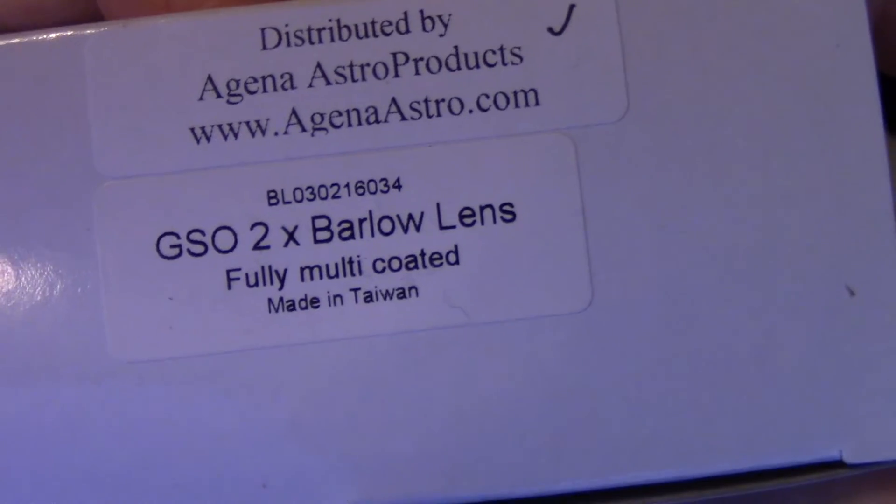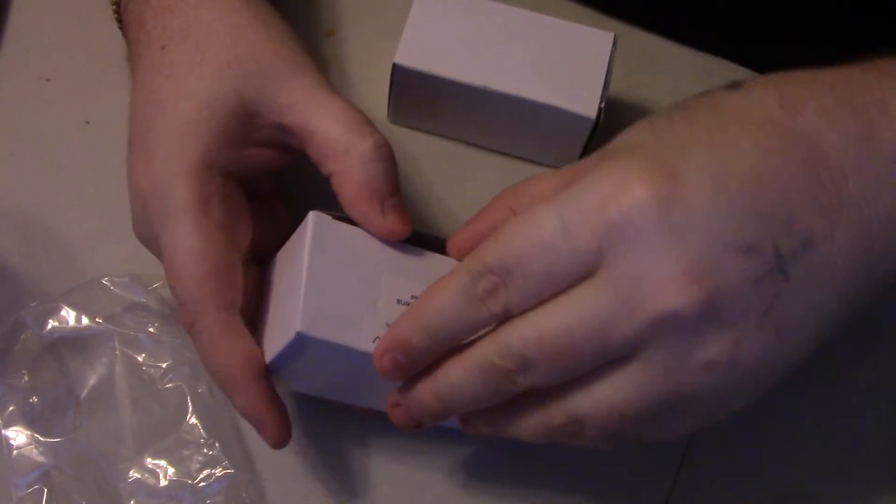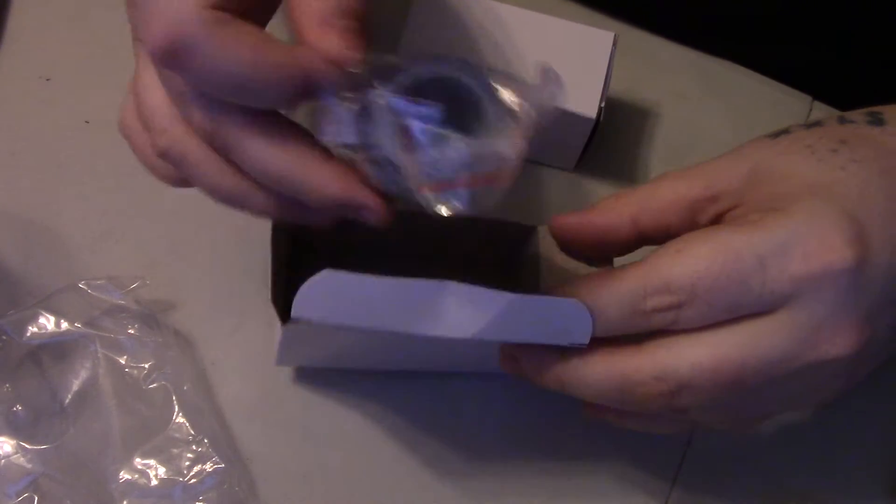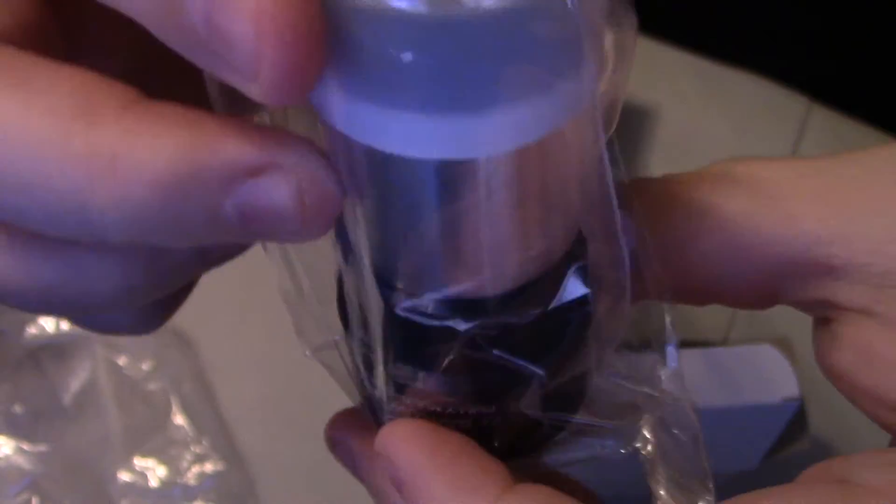This here is the GSO 2x Barlow lens. I'll give you guys a view of this 2x Barlow lens so you guys can see what it looks like. This is the GSO 2x Barlow lens upgrade that I got for my Celestron Power Seeker 80 EQ.